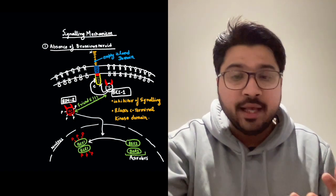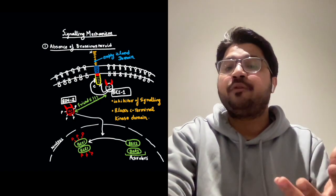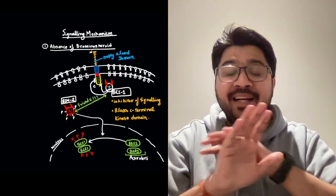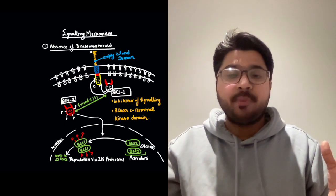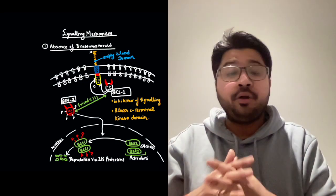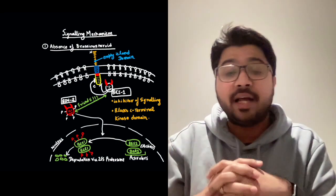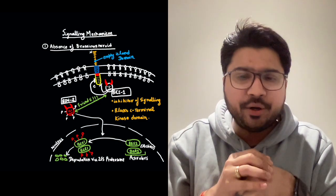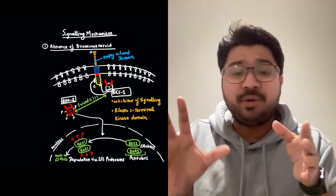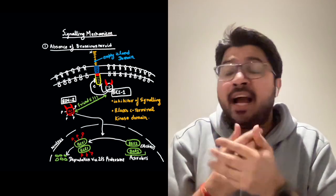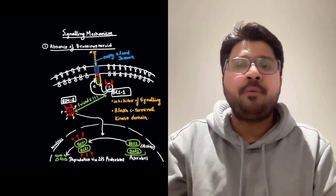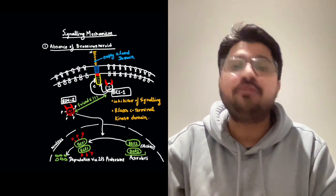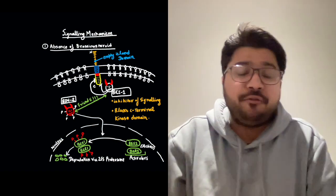Once those inhibitory phosphates are added to the activators BES1 and BZR1, the activators are degraded via 26S proteasome activity. If the activators are degraded, there is no promoter activity, which means gene shutdown and ultimately no brassinosteroid signaling — the sad part of the story.